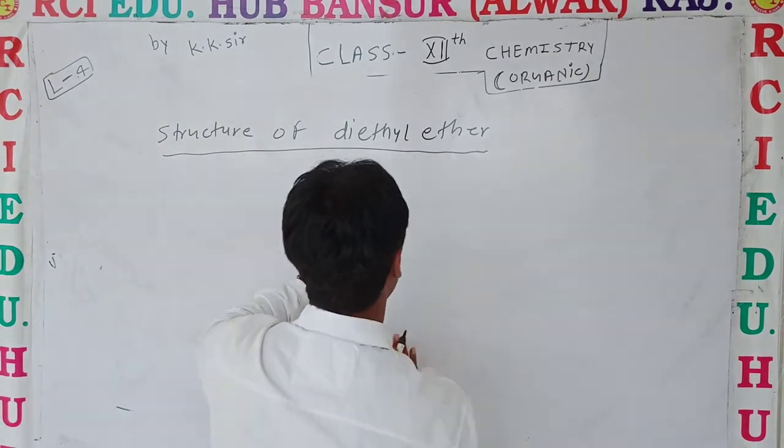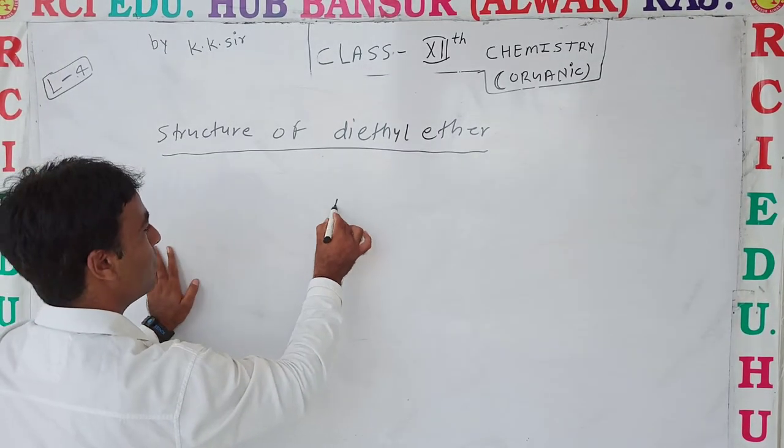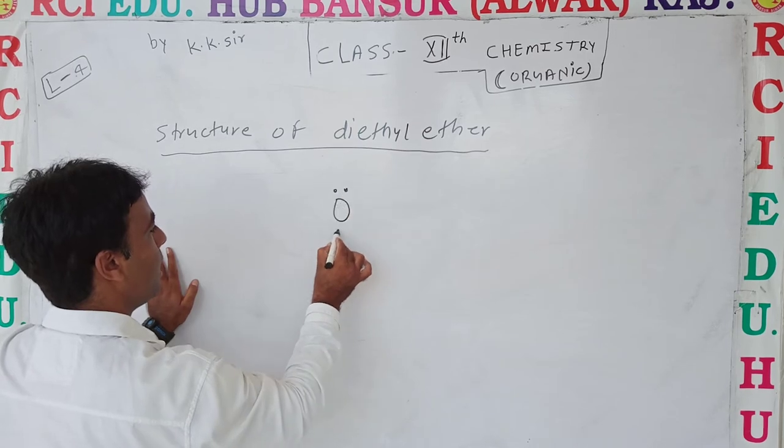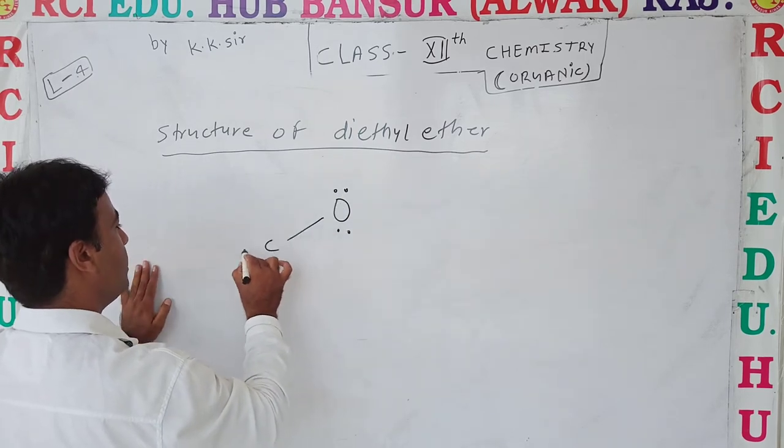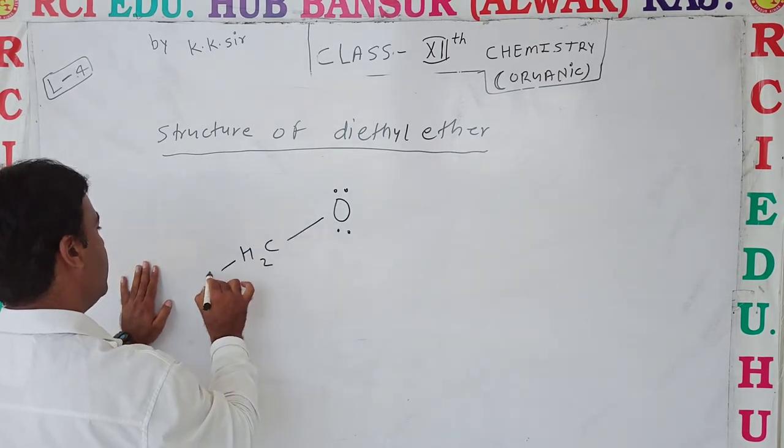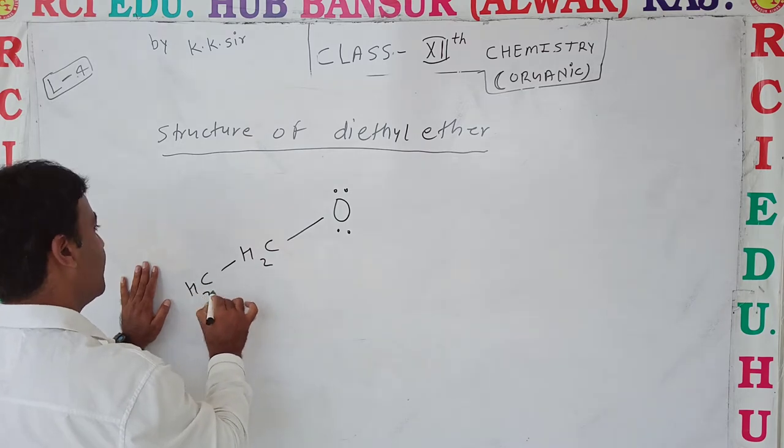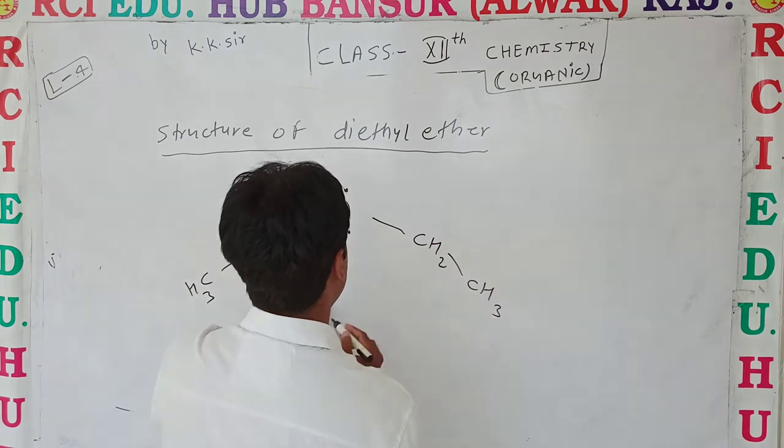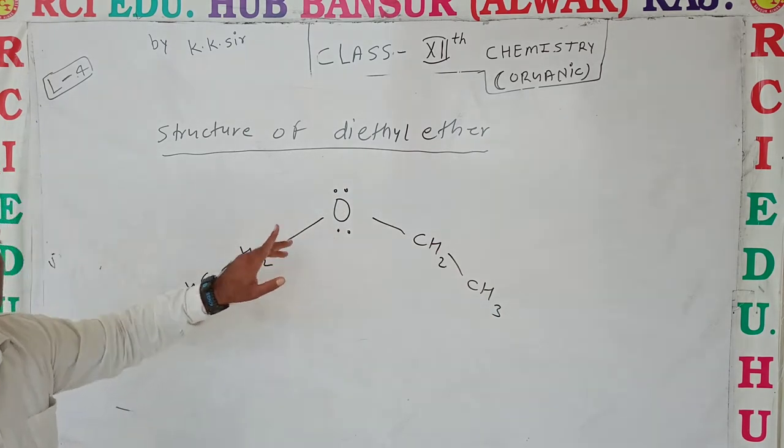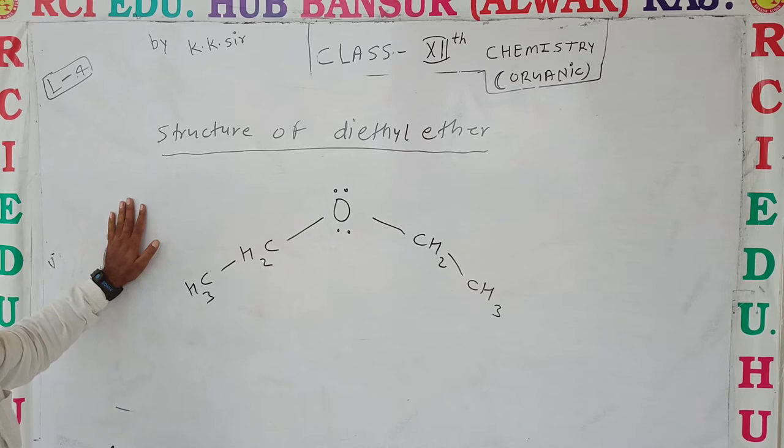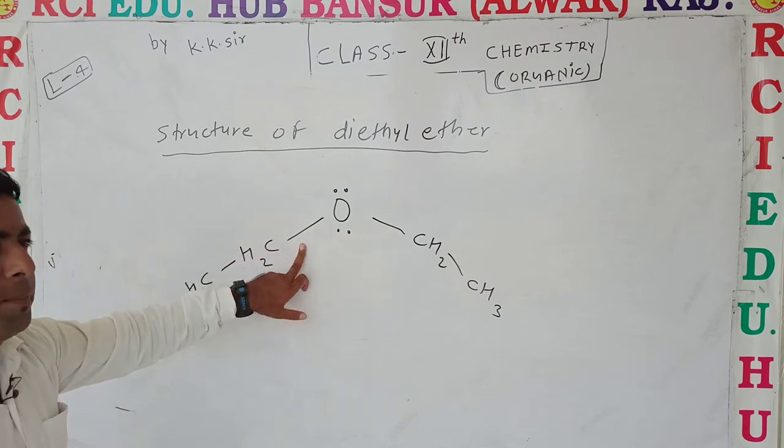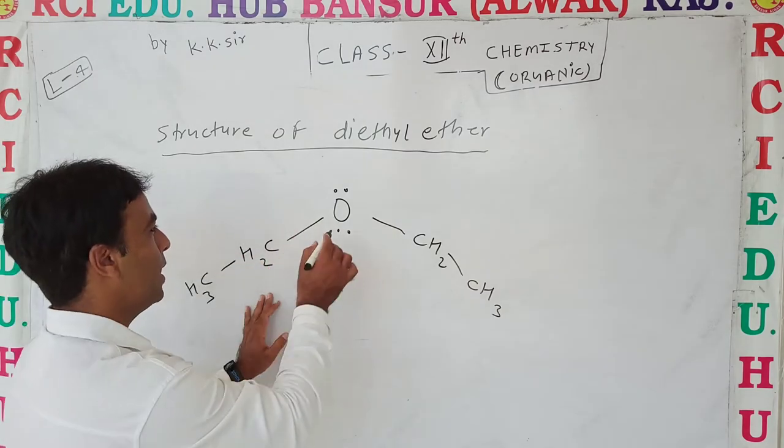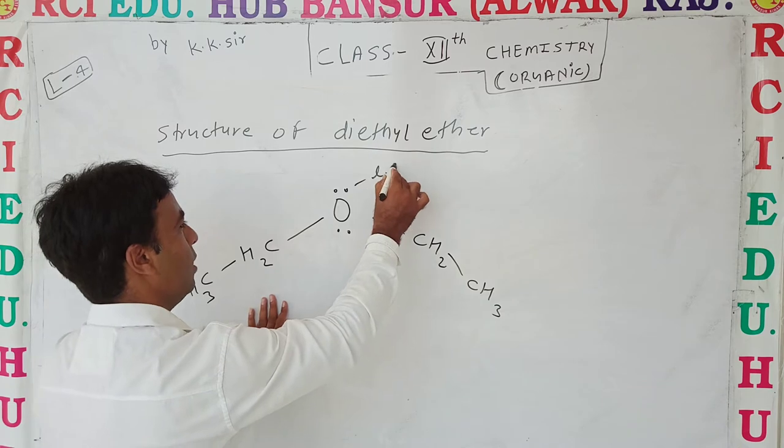First of all, diethyl ether has the structure CH3-CH2-O-CH2-CH3. It has two lone pairs on oxygen and two bond pairs. That is, two lone pairs are called lone pairs.